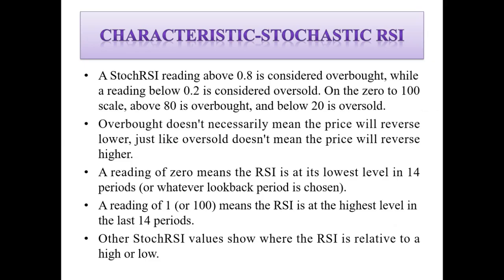A Stochastic RSI reading above 0.8 is considered overbought, while a reading below 0.2 is considered oversold. On a 0–100 scale, above 80 is overbought and below 20 is oversold. Keep in mind that overbought doesn't generally mean the price will reverse lower, just as oversold doesn't mean the price will reverse higher.